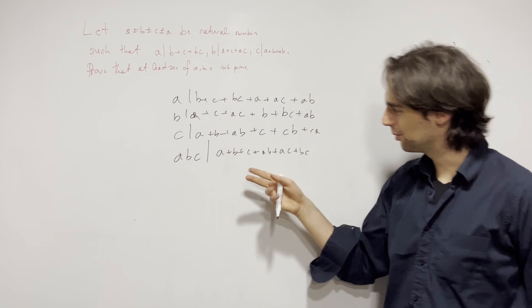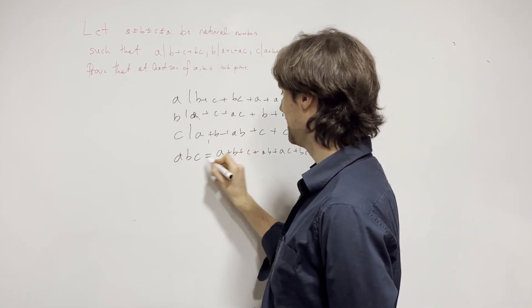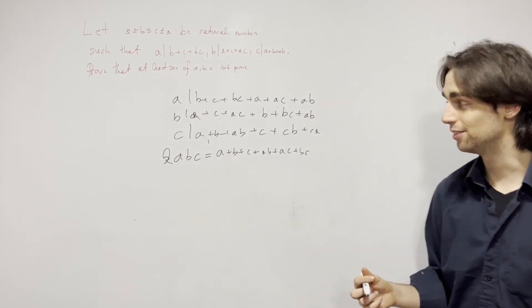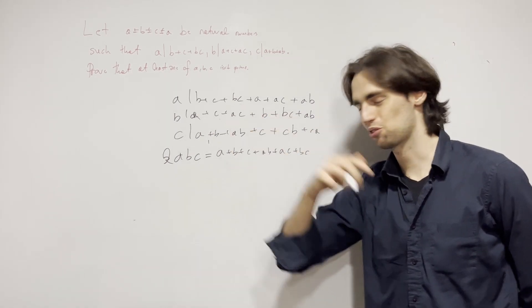Now, let's call this division what it really is, an equality. There's, let's say, K, that's a positive integer, such that this is true.